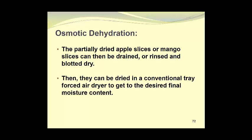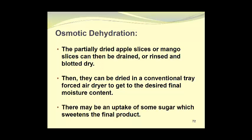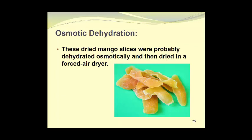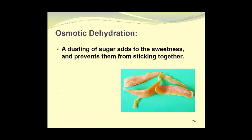They can then be dried in a conventional tray, forced air dryer, to get the desired final moisture content. There may be an uptake of some sugar which sweetens the final product. These dried mango slices were probably dehydrated osmotically and then dried in a forced air dryer. These dried mango slices from supplier number one have a sugar content of approximately 66%, and most of this is natural. Remember that the fresh mangoes have a reasonably high sugar content and when you remove the moisture, the percent sugar on a weight basis increases as the moisture is removed. A dusting of sugar adds to the sweetness and prevents them from sticking together. So in this case, the mangoes from supplier number two have a dusting of sugar which increases the sugar content to 69%, but again, most of this is natural.